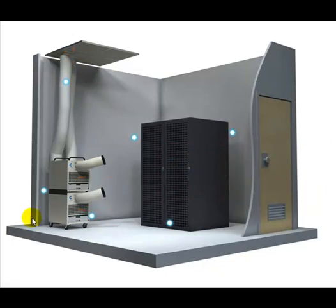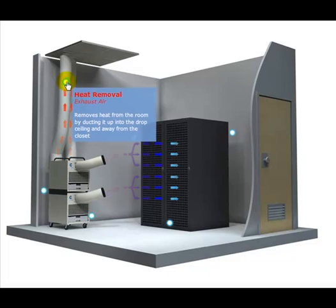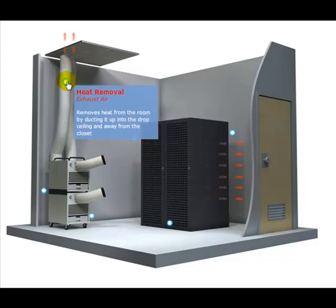And on the Cool Cube you can see that this shows the heat removal. It draws in and removes the heat from the room by ducting it up into the drop down ceiling away from the closet.